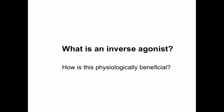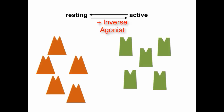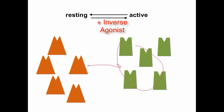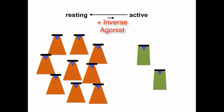Thinking about the Grelling case, we talked about an inverse agonist and how it is physiologically beneficial. Back to our receptor population — now we have an equal number of receptors that are active and inactive, representing a high level of constitutive activity. At basal level, a significant population of receptors are in the active conformation. The inverse agonist binds to the active site but instead of shifting the receptor into the active conformation, it drives it back toward inactive, thereby lowering the constitutive activity.